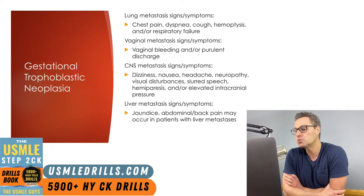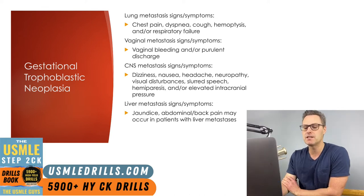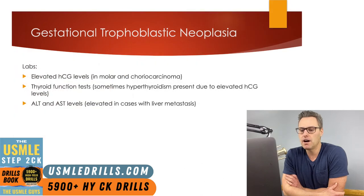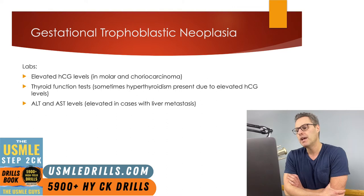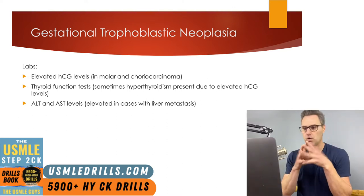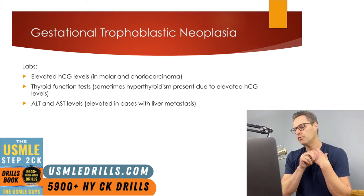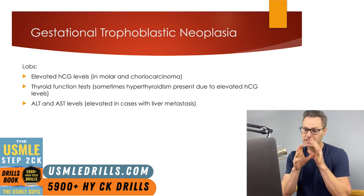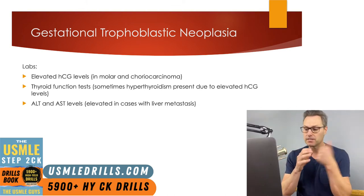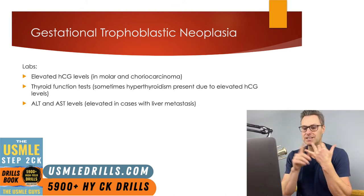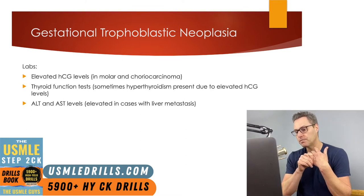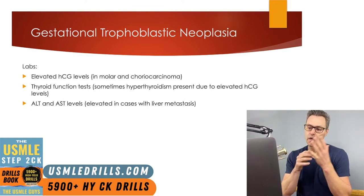Most often, patients with metastasis to the liver will be asymptomatic, but some cases may develop jaundice, abdominal pain, or even back pain. Lab abnormalities in gestational trophoblastic neoplasia depend mostly on the tissue origin of the neoplasia, how large it's grown, and whether there is metastasis. GTN that arises from an invasive mole or choriocarcinoma can have elevated HCG levels, and if those levels get really high, they can cause hyperthyroidism — so we'd perform a thyroid function test.